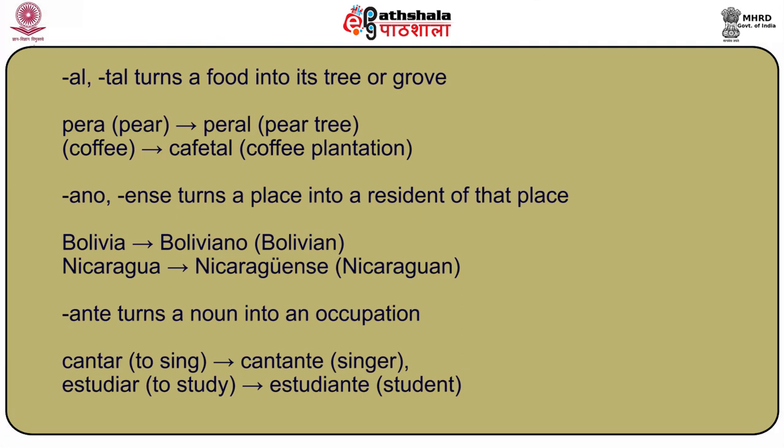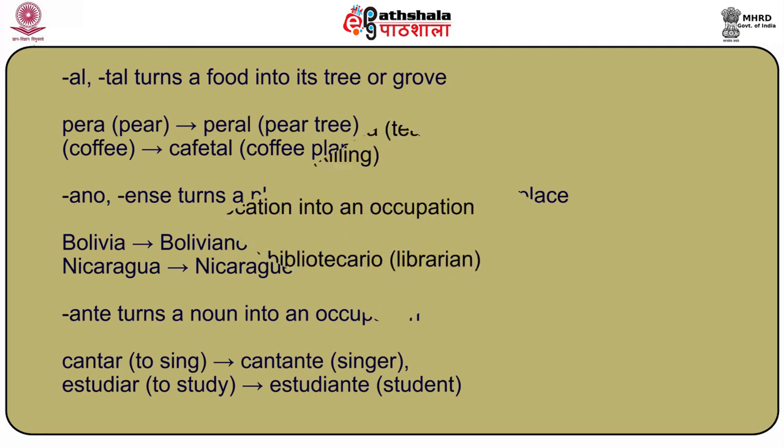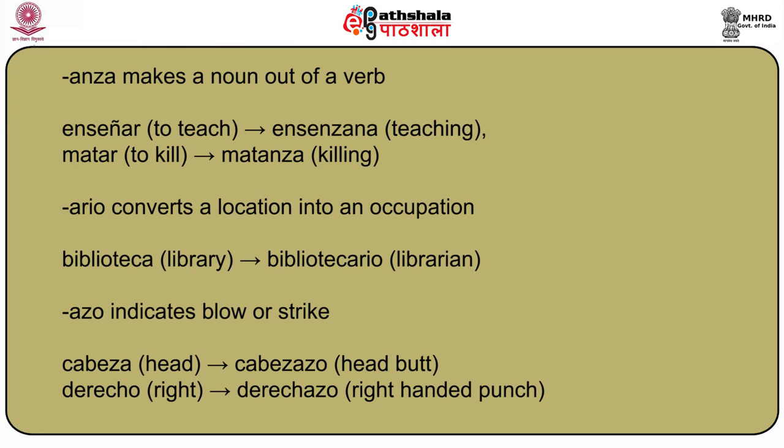-Ano or -ense turns a place into a resident of that place: Bolivia → boliviano (Bolivian); Nicaragua → nicaragüense (Nicaraguan). -Ante turns a noun into an occupation: cantar (to sing) → cantante (singer); estudiar (to study) → estudiante (student). -Anza makes a noun out of a verb: enseñar (to teach) → enseñanza (teaching); matar (to kill) → matanza (killing). -Ario converts a location into an occupation: biblioteca (library) → bibliotecario (librarian).